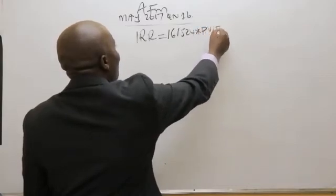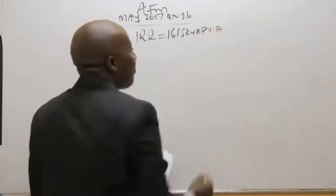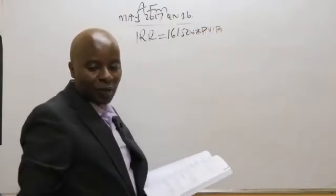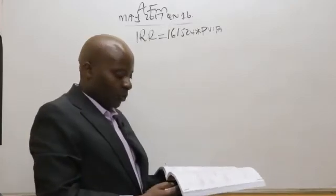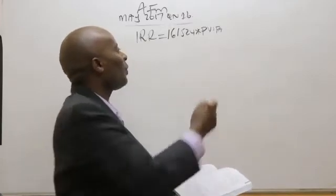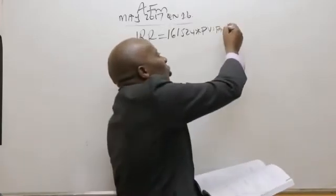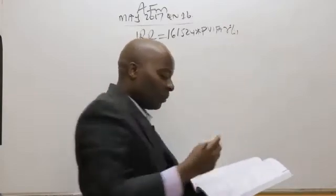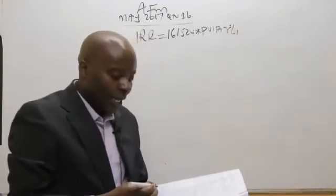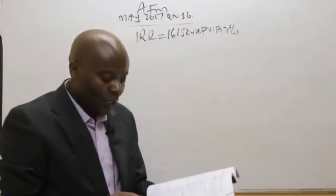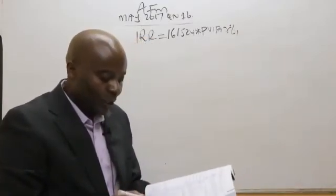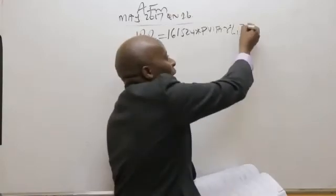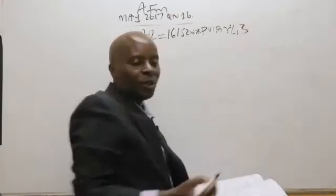I have to apply the PVIFA — the present value interest factor of an annuity. I don't know what the rate R is, but I know the number of years. There are three years for this particular project.